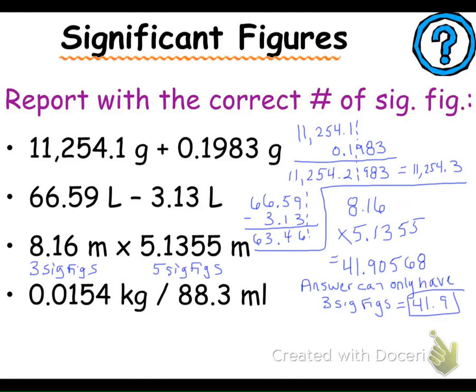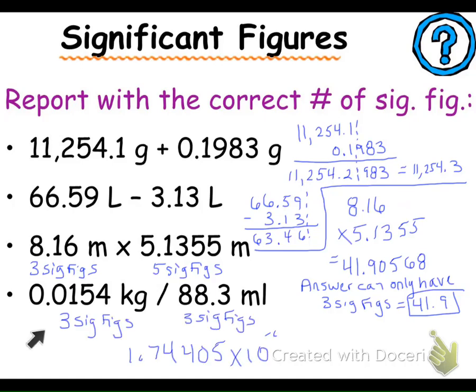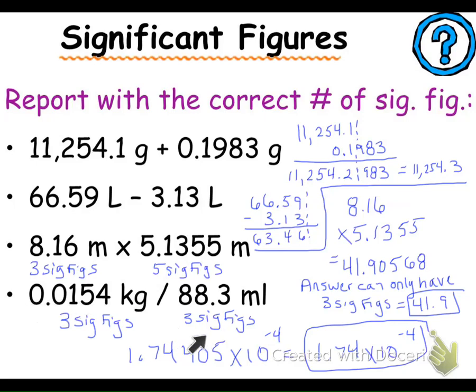When multiplying and dividing, again identify the sig figs for each. In this one, it only has 3 sig figs because of the zeros-to-the-left rule. Once you do the math, you get a value that ends up being a negative exponent — 1.74 times 10 to the negative 4 is the correct answer, and I would appreciate if you represent that in scientific notation. So now you're ready with significant figures. You've listened to the lecture part and now you're ready to practice in class.